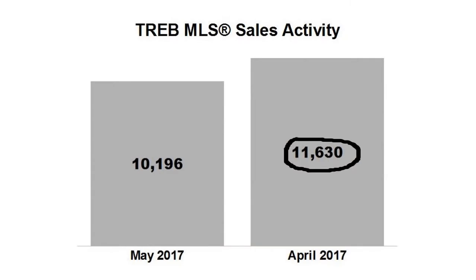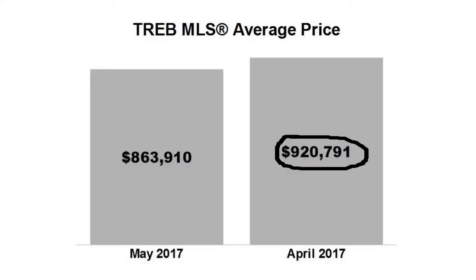In the GTA, in April, 11,630 homes sold versus May where only 10,196 homes sold. Prices also dropped: $920,791 in April versus $863,910 in May.